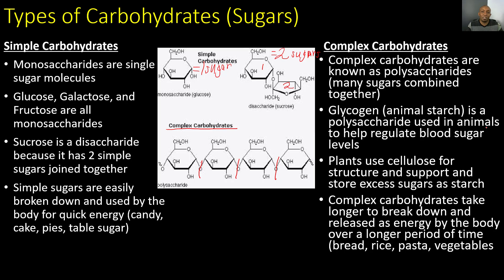Some examples of complex carbohydrates would be bread, rice, pasta, and vegetables. People who are marathon runners do something called carb loading, which means they eat a lot of bread, rice, and pasta the night before a big marathon. Why do they do this? So they can have energy that is slowly released by the body over time.